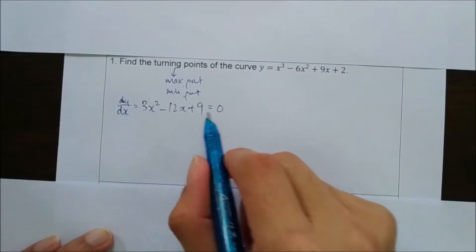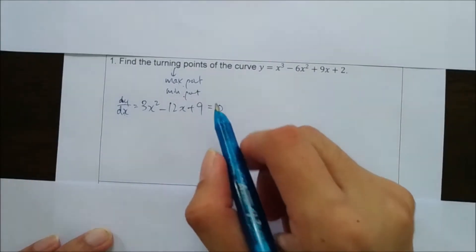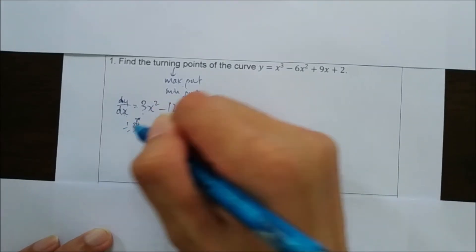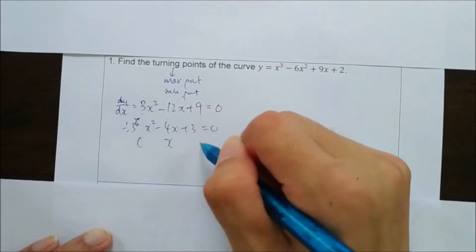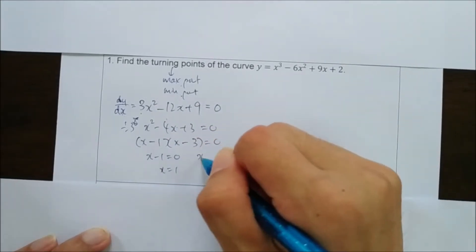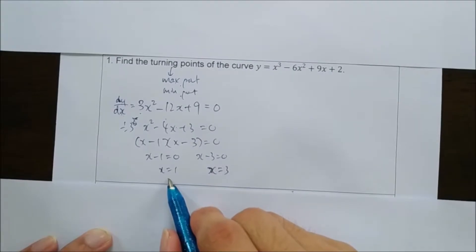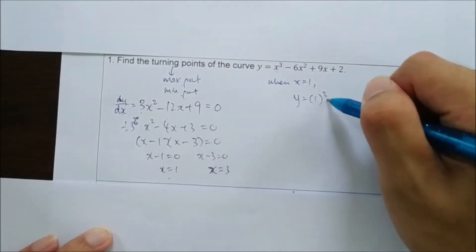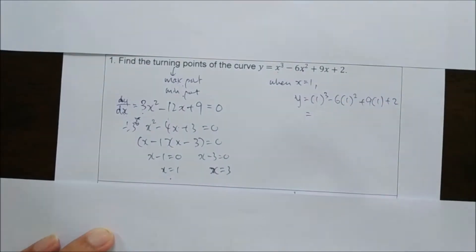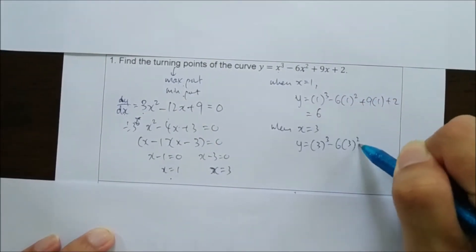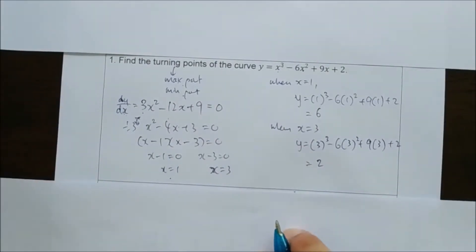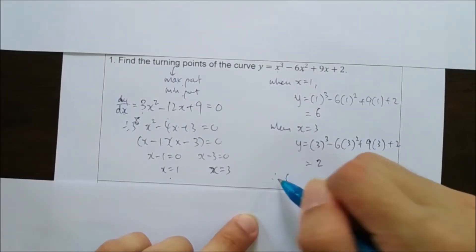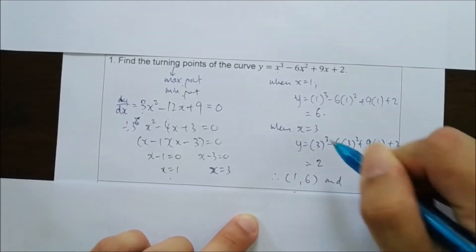At the turning points, dy/dx equals 0, so we set the derivative equation equal to 0 and factorize. Dividing through by 3, we get both values of x. We then find the value of y for each x. When x = 1, we substitute into the original equation. Since the question didn't ask us to determine maximum or minimum, we only write down the points. The two turning points are (1, 6) and (3, 2).